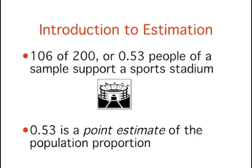Out of a random sample of 200 people, 106 say they support the proposition. Thus, in the sample, 0.53 of the people supported the proposition. This value of 0.53 is called a point estimate of the population proportion. It is called a point estimate because the estimate consists of a single value or point.